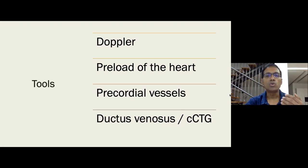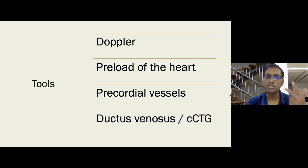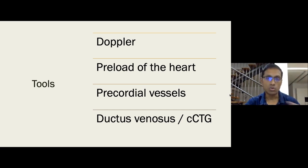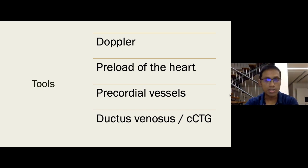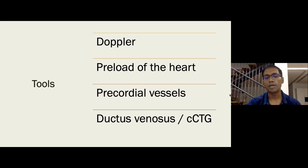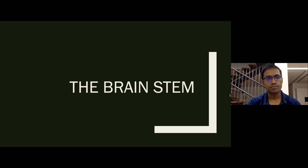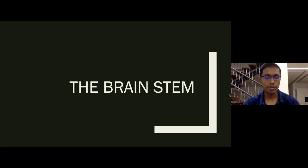The tools to assess the heart are Doppler, specifically looking at the preload: when the heart is failing, there is increased pressure in the pre-cordial vessels — the IVC, SVC, and ductus venosus. Of these, the best vessel is the ductus venosus. The computerized CTG also assesses cardiac status, but since it's not routinely practiced across India, the ductus venosus is the primary tool for assessing cardiovascular adaptation.